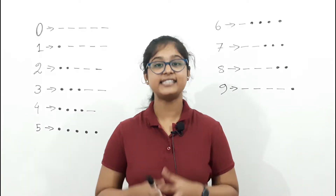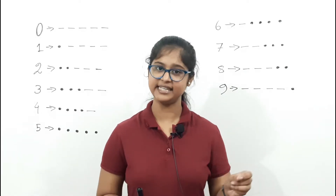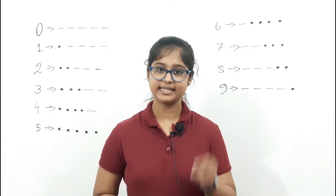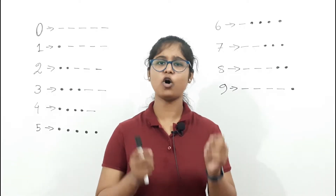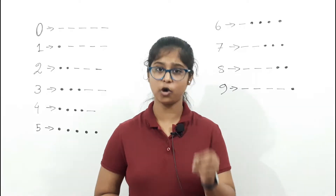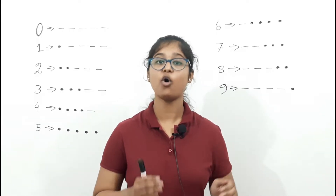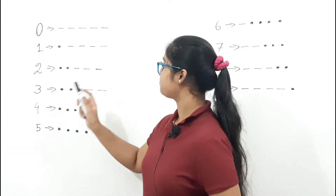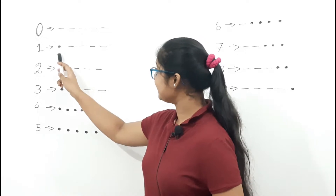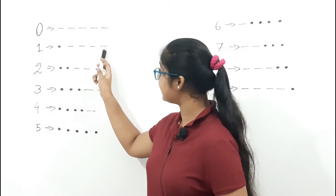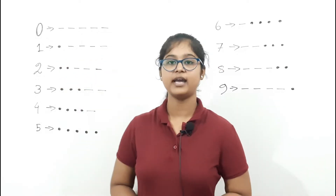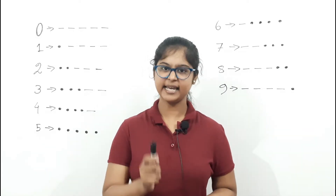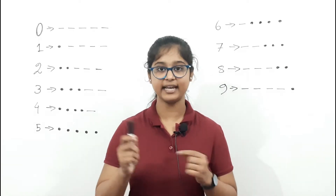So the thing is: where should we pronounce 'D' and where should we pronounce 'DIT'? 'D' is always pronounced when it is followed by either DIT or DAH. For example, one: D, DAH DAH DAH DAH. And where should we pronounce DIT? DIT will always be pronounced at the end.